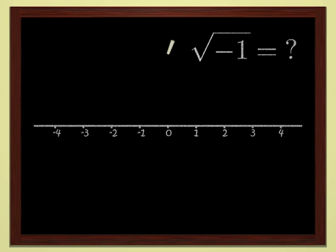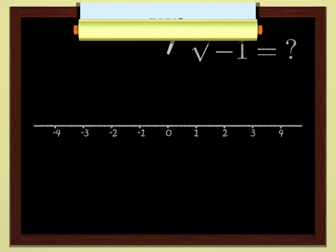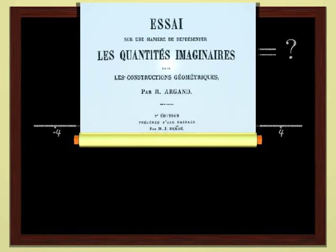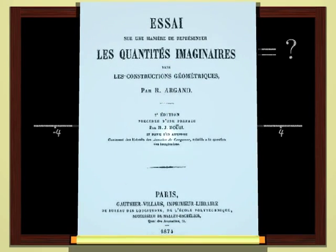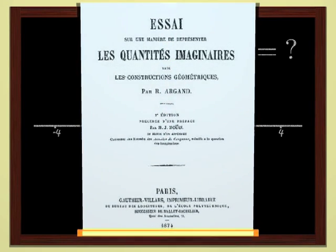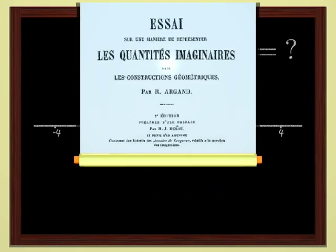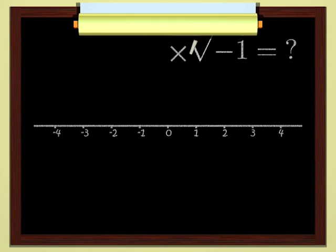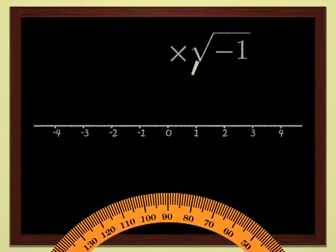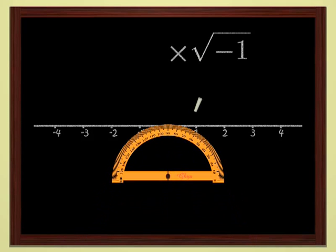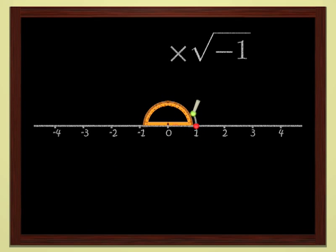But, of course, we are underestimating the inventiveness of mathematicians. At the beginning of the 19th century, Robert Argon had a really great idea. He said to himself, since multiplying by minus one is a 180 degree rotation, its square root is a rotation by one half of 180 degrees, 90 degrees.